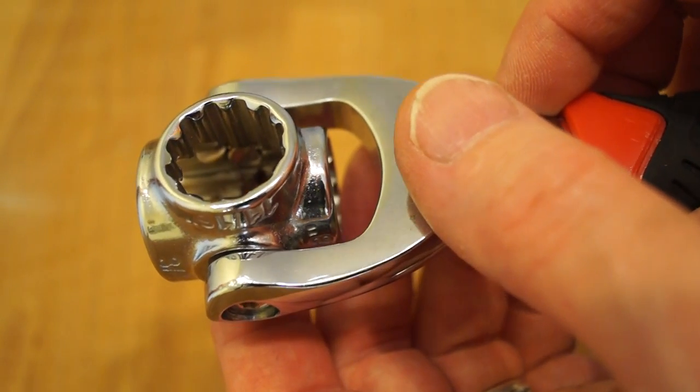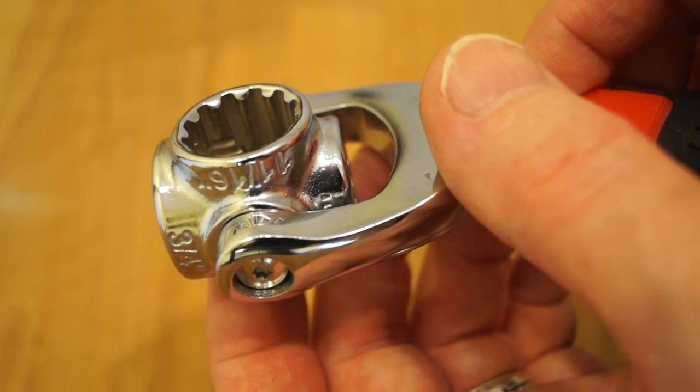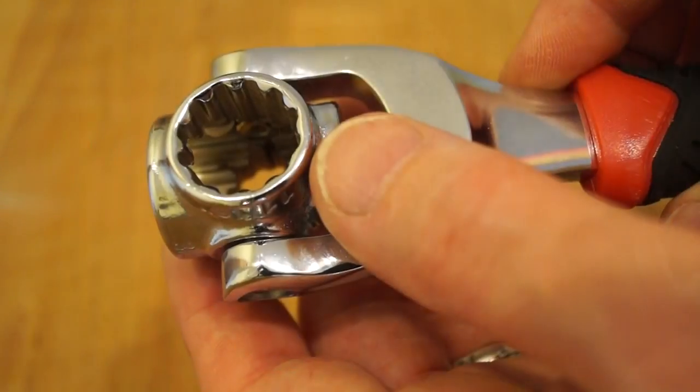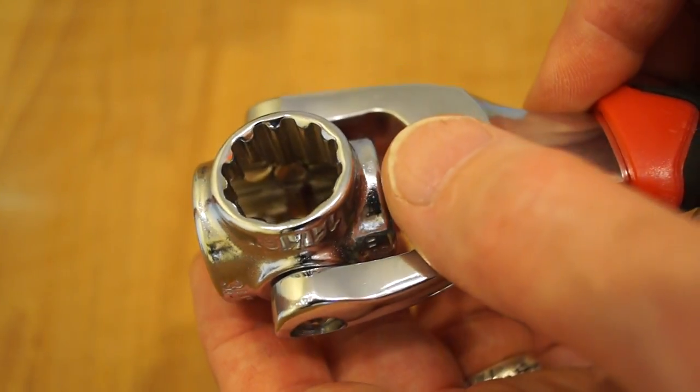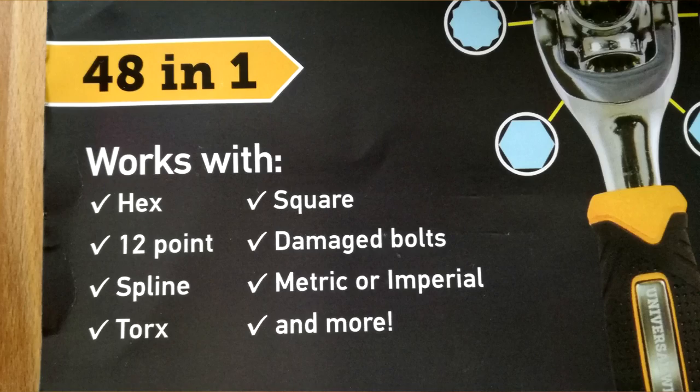Now you can see here the difference between the old style of socket and then this newer style of socket. They will accept just about any screw or nut head you could put in here as you've seen on the picture earlier on, hex splines damaged heads etc.